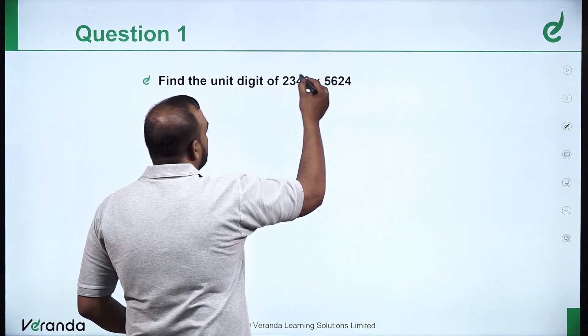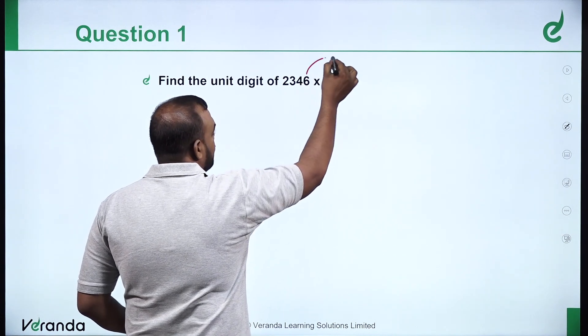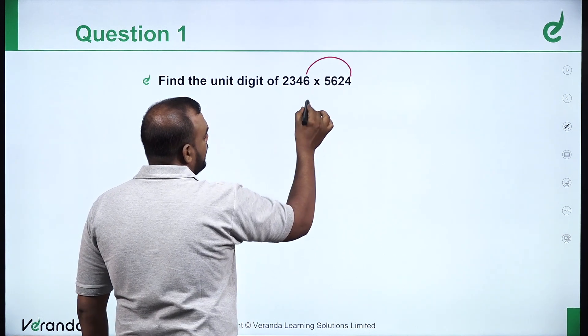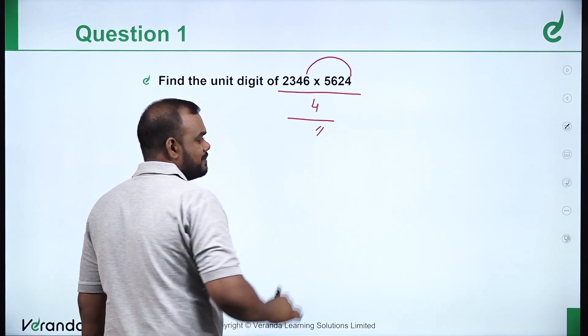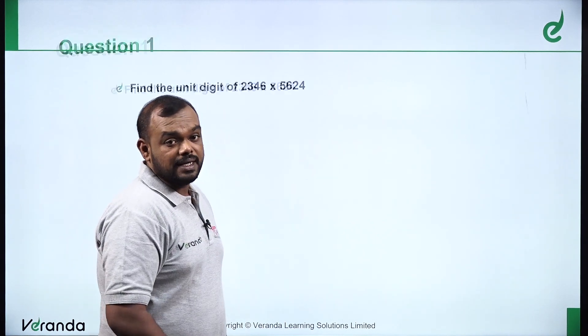Find the unit digit of this number. 6 into 4 is 24, so the unit digit is 4. Next one is this.